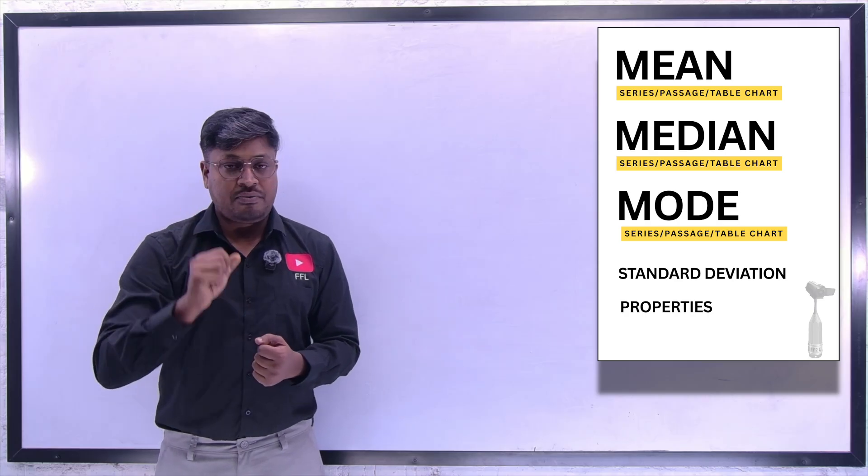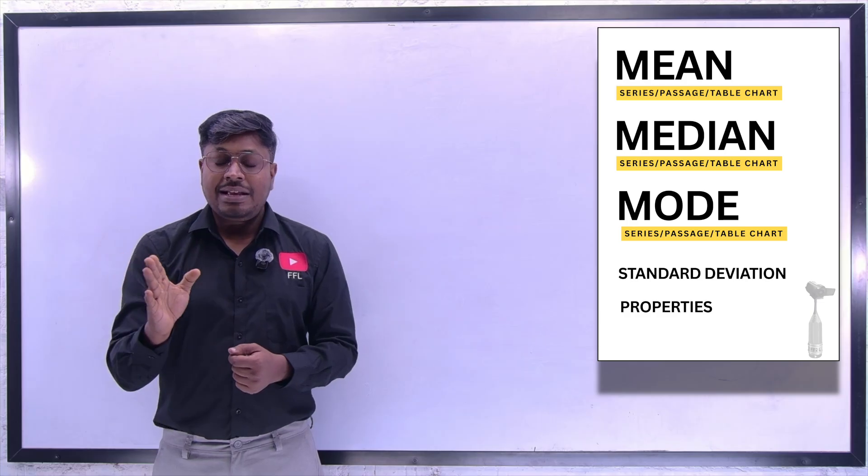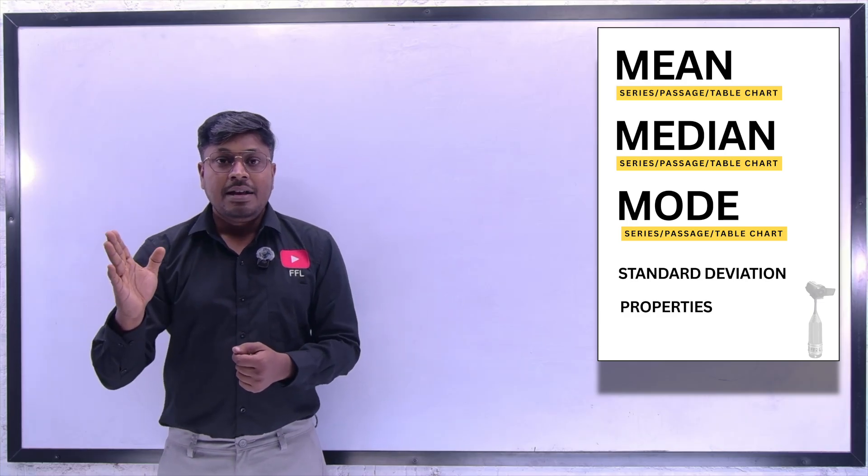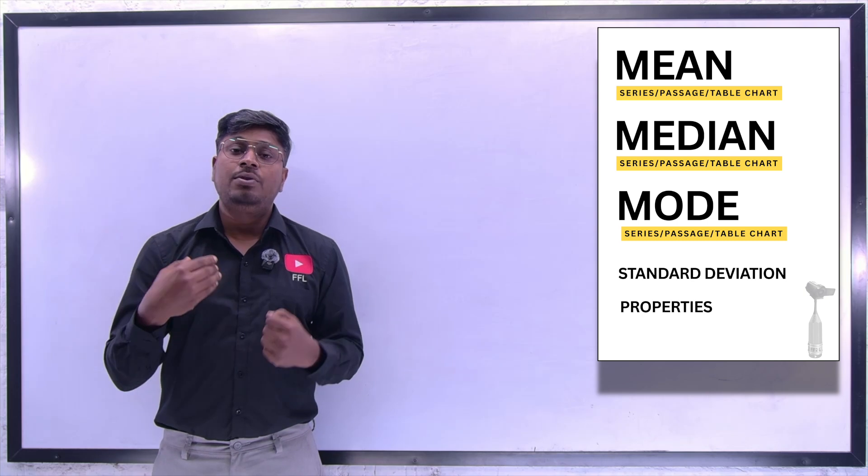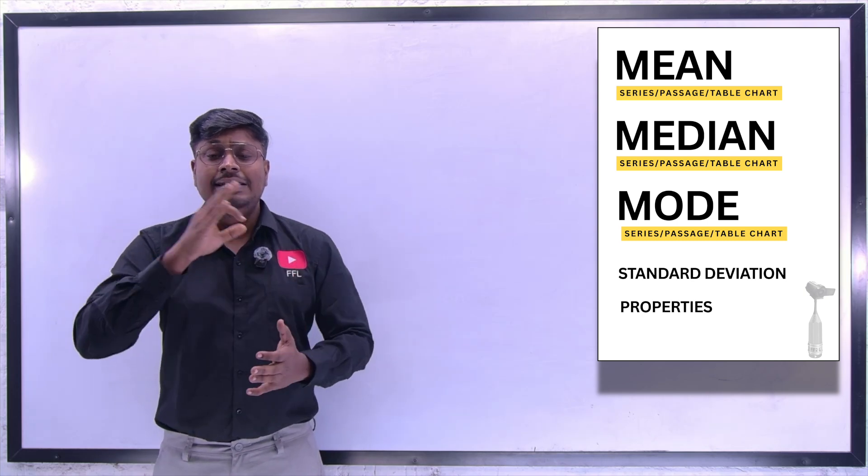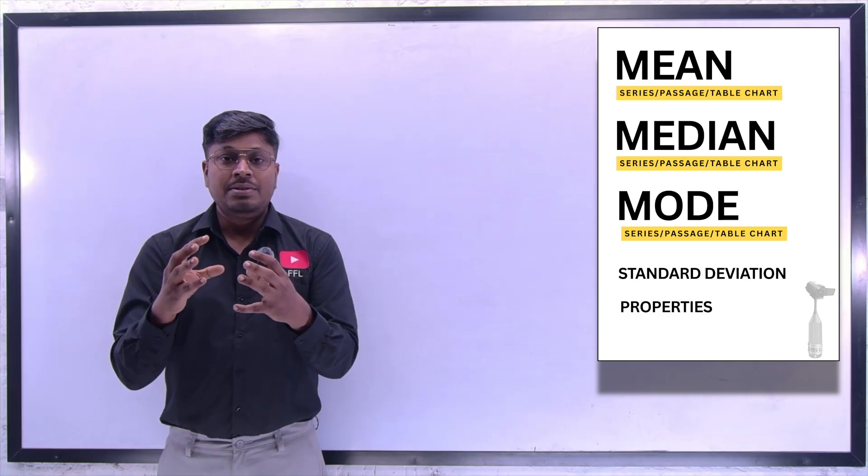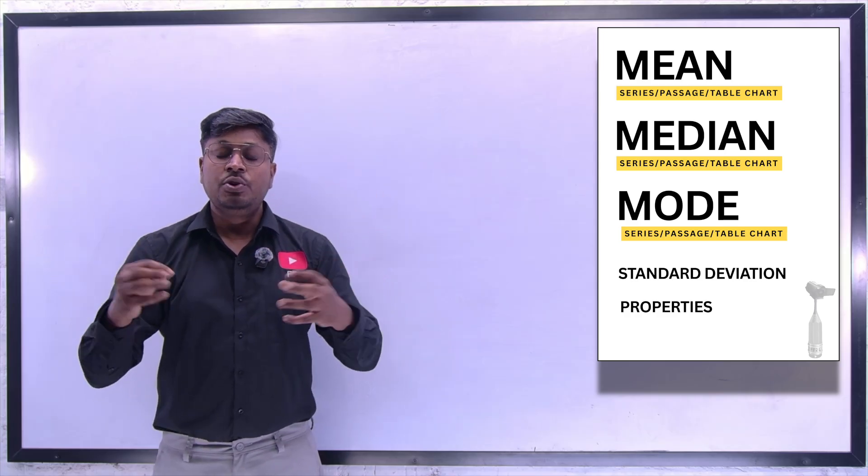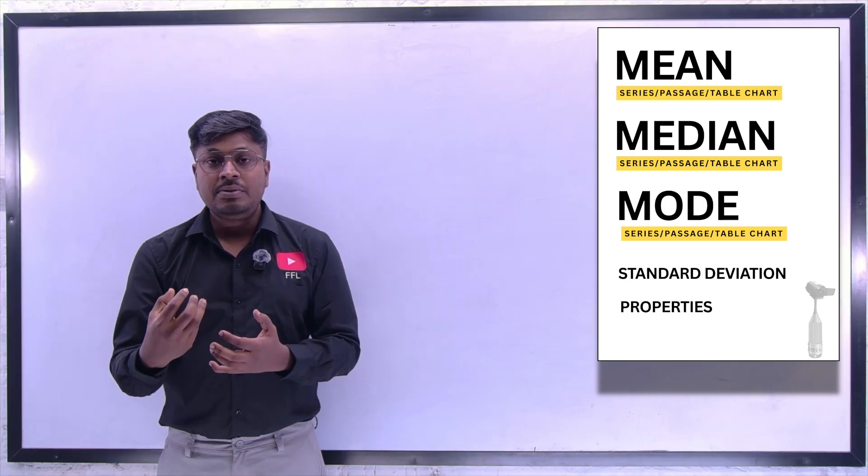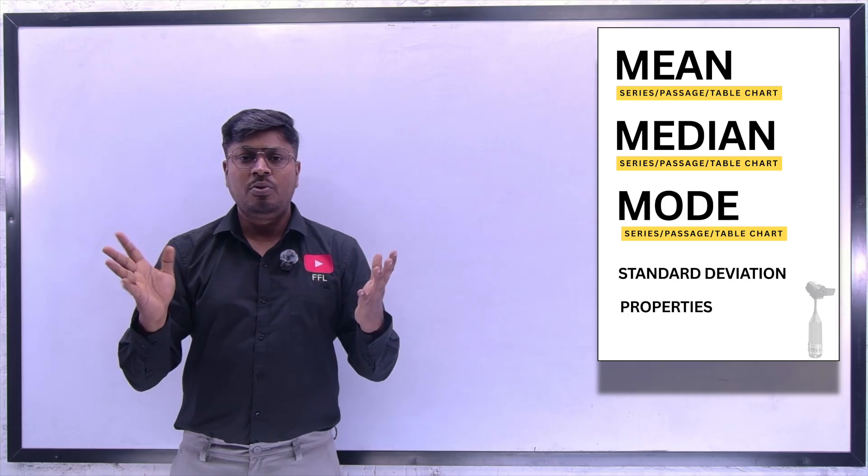So that is one type of question. The second type of question is a table. For example, they will give you all the values in a table chart. By looking into the table you have to find what is the mean or the median. The third category of question is when complete values are in the form of a sentence. So you have to read the sentence and find out all the values and then apply the formula to find mean or median or mode.